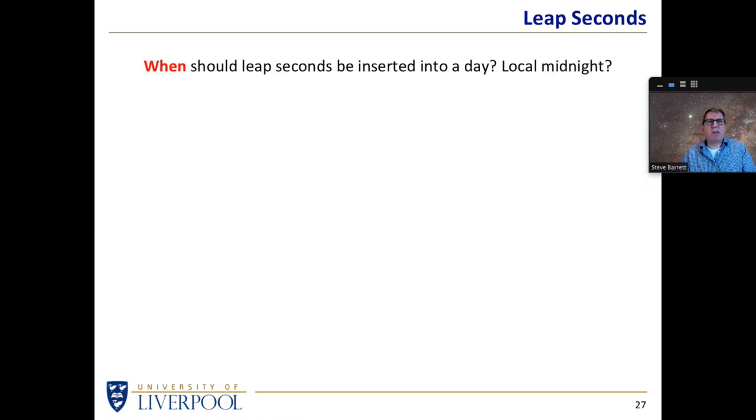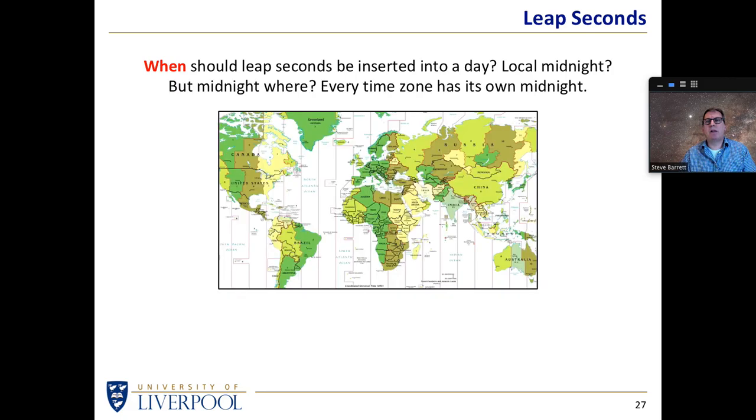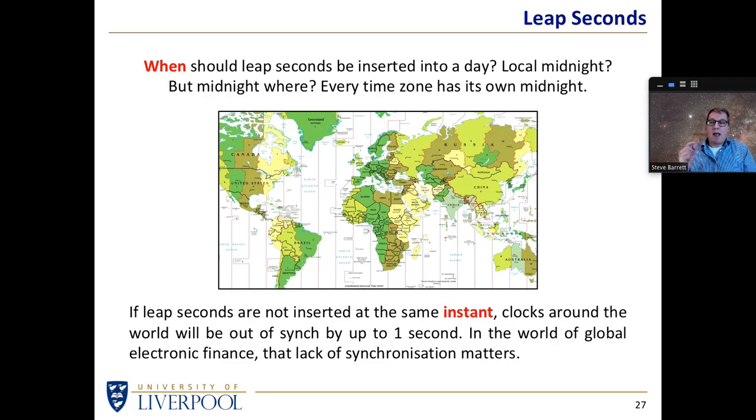And should you necessarily put it in at midnight? And if you do put it in at midnight well who's midnight? Because midnight in Japan is going to occur earlier than midnight in China or India or Europe or the USA. And if you don't insert a leap second in every clock simultaneously, that means international clocks will be out of sync with each other by anything up to one second.